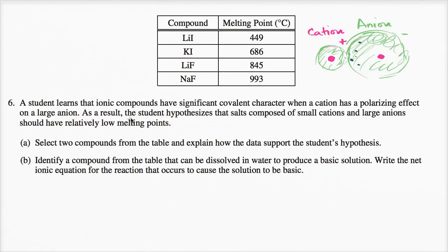As a result, the student hypothesizes that salts composed of small cations and large anions should have relatively low melting points. It should take less energy to break them out of their salt lattice structure when they're in solid form. Select two compounds from the table and explain how the data supports the student's hypothesis.